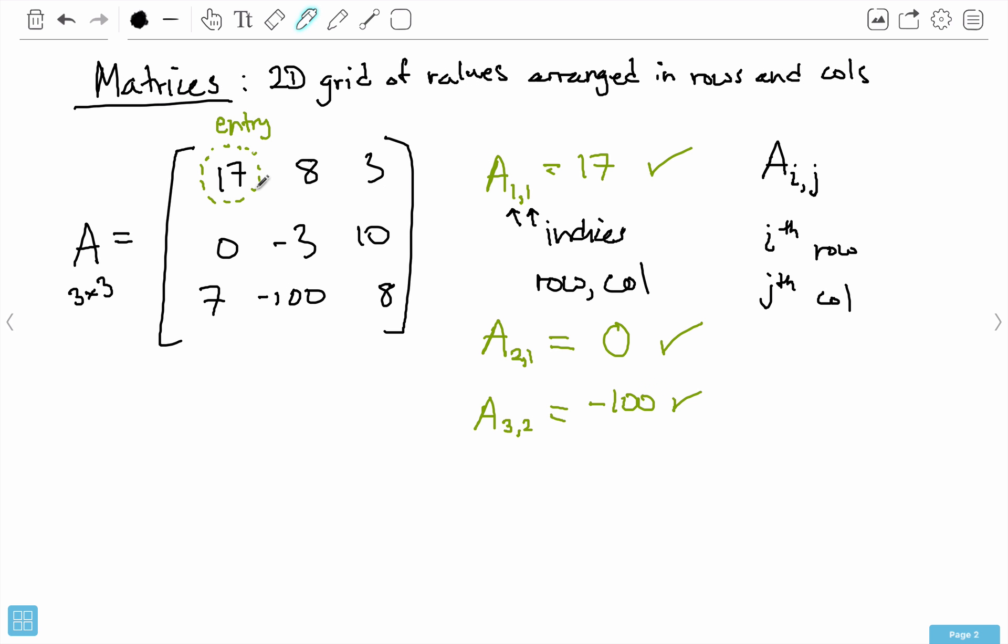To recap, in this video I discussed what matrices are—they're just a 2D grid of values arranged in rows and columns, similar to what an image is. The smallest indivisible unit is an entry for a matrix or a pixel for an image. I also mentioned how we can index matrices using this subscript notation of i,j where i is the row and j is the column. One important thing to note is that matrices start at 1, not 0.